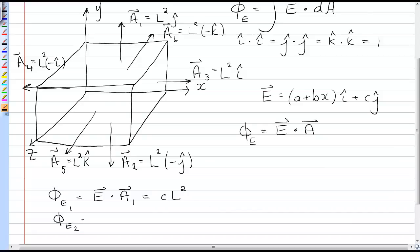Let's do 2 for E dot A2. And for A2 I have L negative j-hat, so I'm going to pick up a negative cL squared.